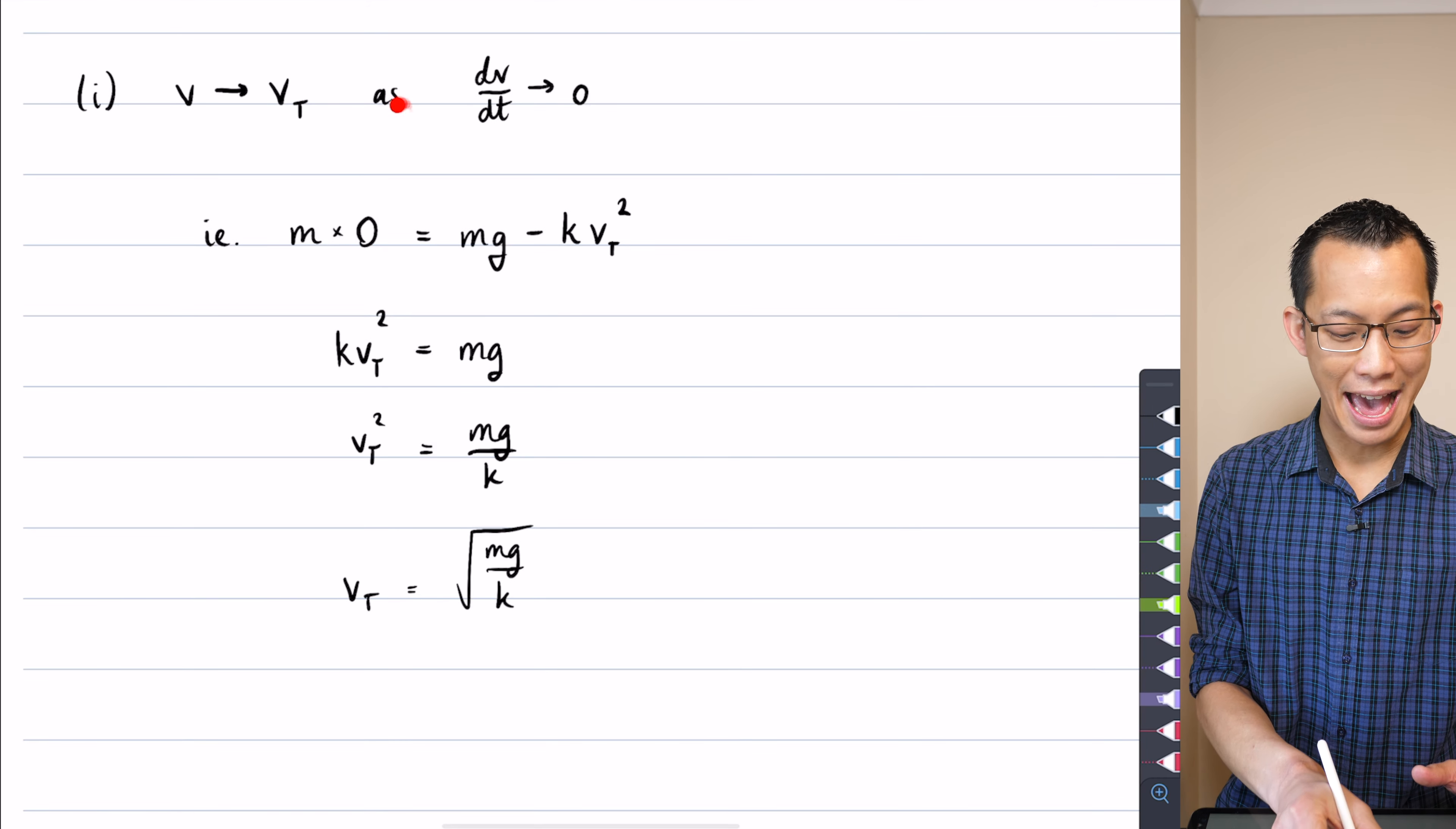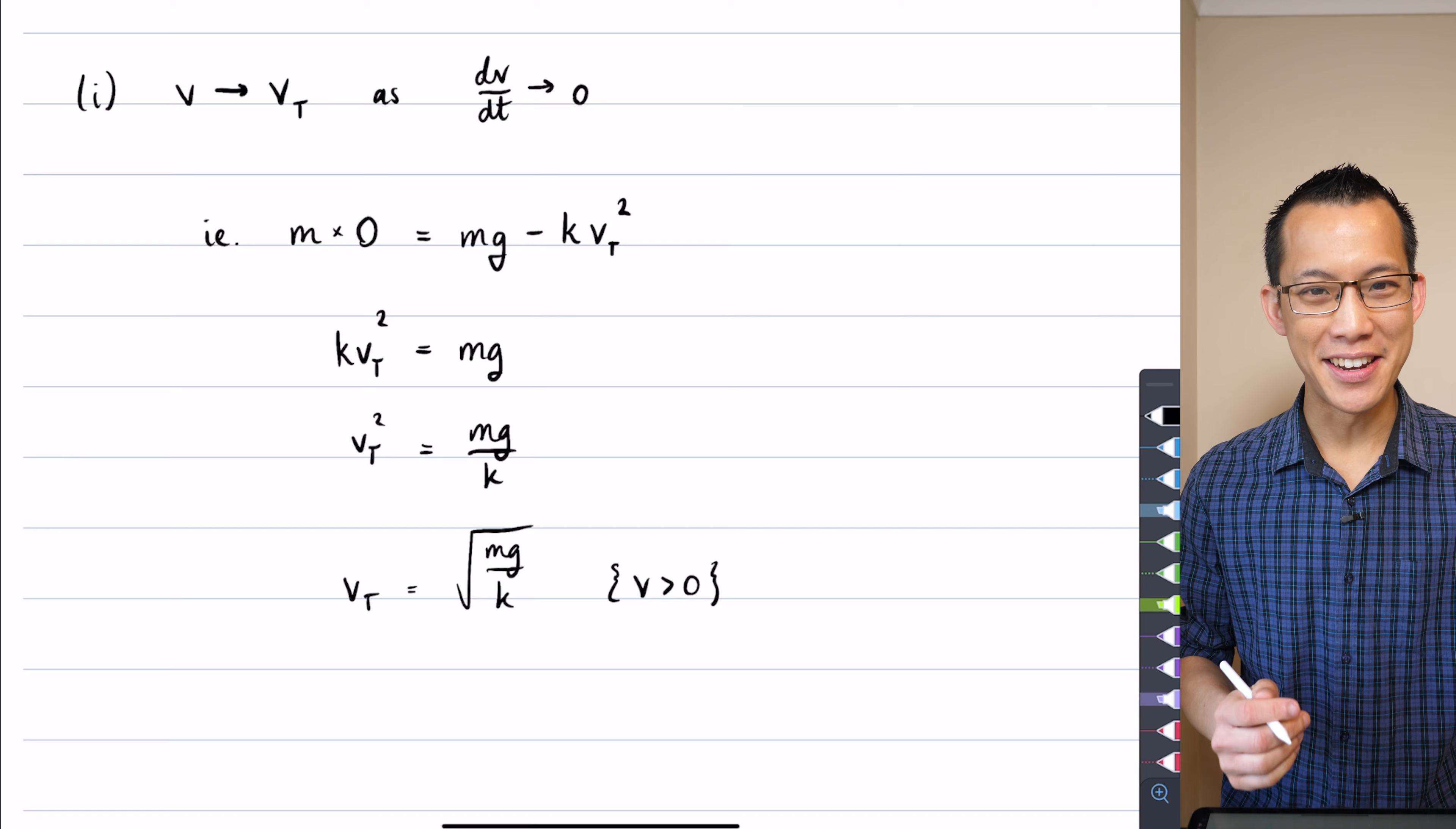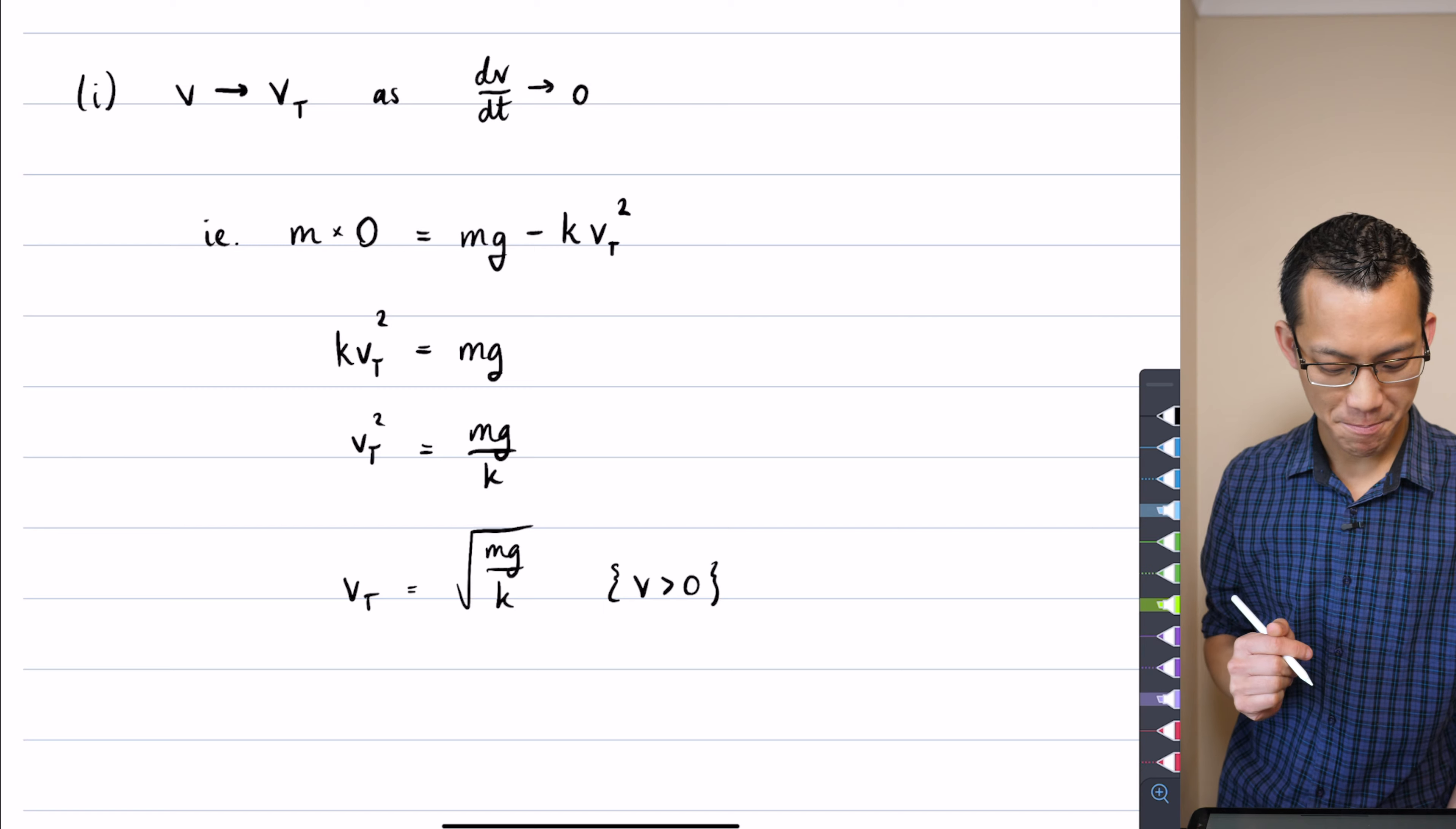So here it probably does warrant saying that here velocity, I'm taking the positive for VT because I'm assuming the resistance is never going to be enough to push them like to be flying, like actually upwards, they'll slow down and going downwards, but they'll never be going upwards. So that's why my V, which downwards is defined as positive, gives me that.